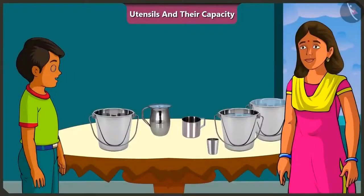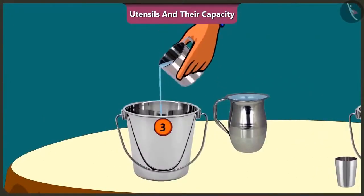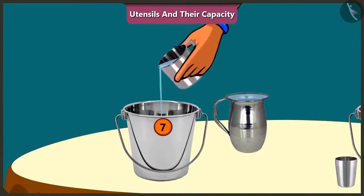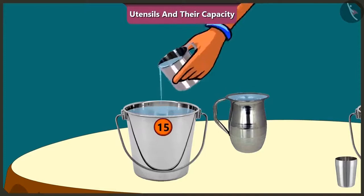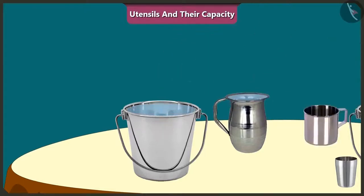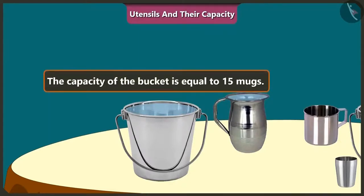Come on, let's fill the bucket using a mug. One, two, three, four, five, six, seven, eight, nine, ten, eleven, twelve, thirteen, fourteen, fifteen mugs of water filled up the whole bucket completely. The capacity of this bucket is equal to 15 mugs of water.